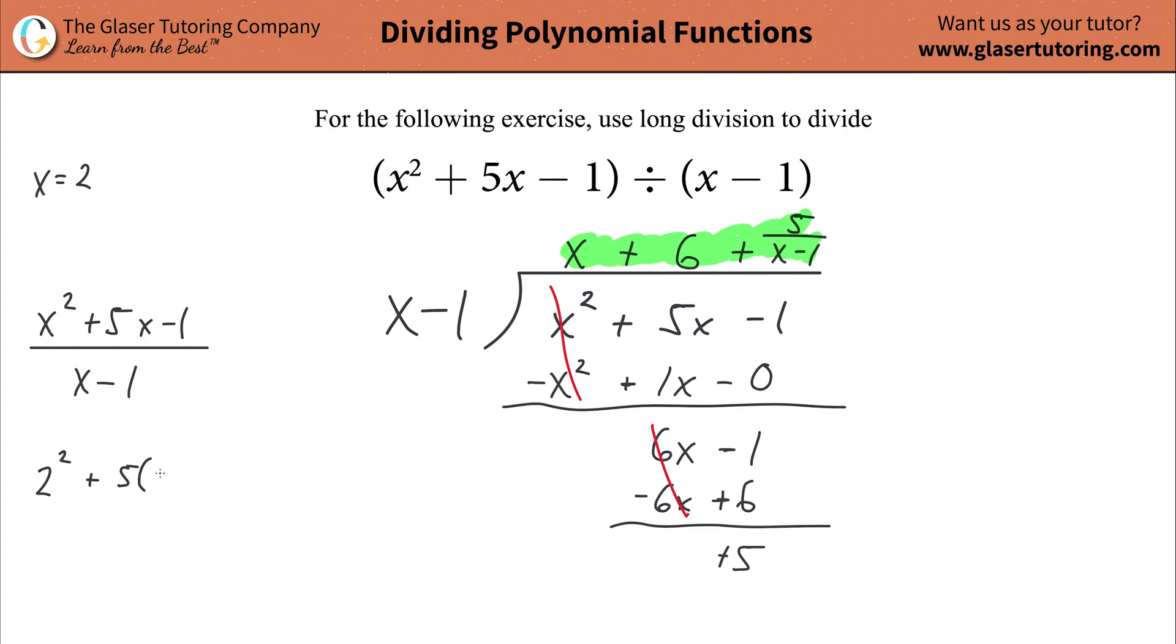So what I'm going to do is I'm going to plug in my two everywhere I see x. So I'm just plugging in a two, all then divided by x minus one. So which was two minus one. So what does this work out to be? Well, two squared is going to be a four. Five times two is 10, minus one, all over then two minus one is one. So what does this work out to be? This is going to be four plus 10 minus one, that sounds like 13 to me. 13. Now what you did was you plugged in x for this term and this term. In other words, you plugged in x for this and you plugged in x for this and you realize that the answer should be 13.